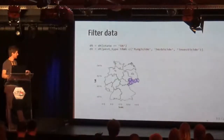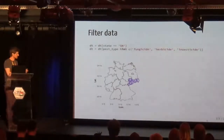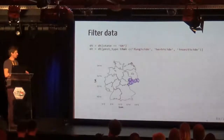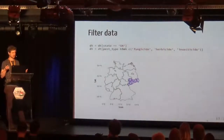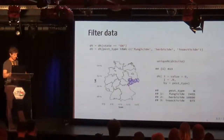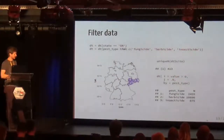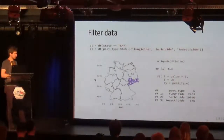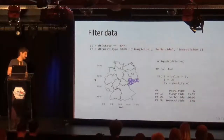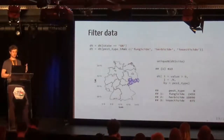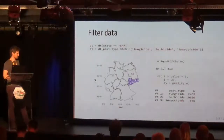We did some further data preparation. We refined the data to just Saxony, due to the quite heterogeneous sampling effort across the 13 states. We also refined it to the three pesticide groups, leaving us with about 400 sites in the state. Looking at the count of quantified pesticides — where measurements that were only detected but not quantified were set to zero — we see that herbicides are by far the most frequently quantified group, followed by fungicides and insecticides.